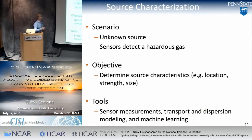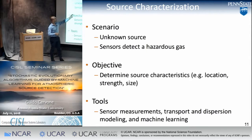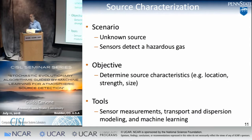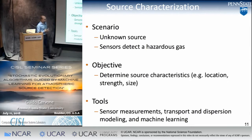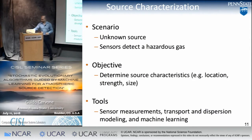Source characterization: the typical scenario is that there is a source unknown to us, and sensors on the ground, in air, or maybe from space detect a potentially toxic gas. Our objective is to determine the characteristics of that source — location, how large it was, whether it was single or multiple, static or dynamic. The only tools we have are measurements at the sensors, transport and dispersion models, and machine learning.